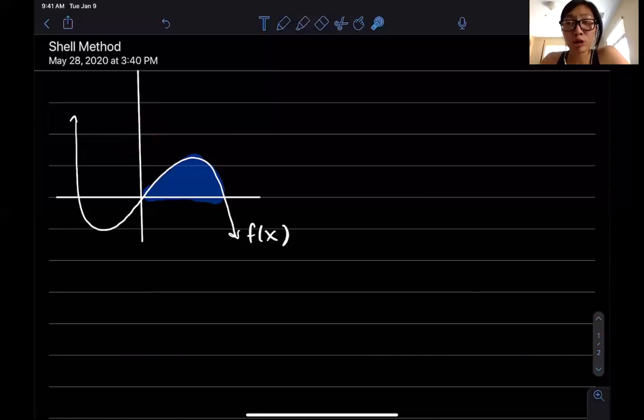That being said, that means you can't use the disk or the washer method because your cross sections aren't gonna work out nicely. So what we do instead is we're gonna use the shell method.